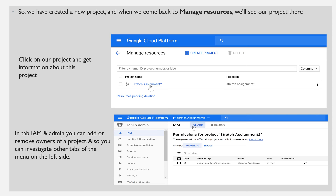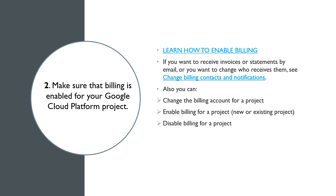Click on your project to get information about it. In the IAM and Admin tab, you can add or remove owners of the project. You can also investigate other tabs on the menu on the left side. Before using Google Cloud Platform, make sure that billing is enabled for your Google Cloud Platform project. Go to the link to learn how to enable billing. You can also change the billing account for a project and enable or disable billing for a project.